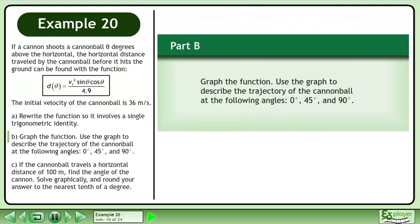Now we'll move on to Part B. Graph the function. Use the graph to describe the trajectory of the cannonball at the following angles: 0 degrees, 45 degrees, and 90 degrees.